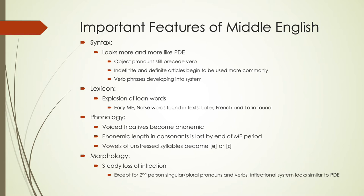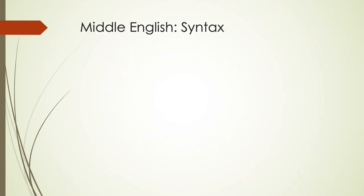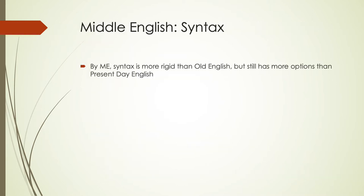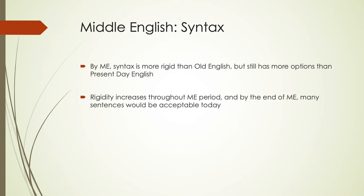Focusing on syntax and lexicon today, Middle English syntax is starting to become more rigid than Old English, but still a little bit less rigid than what we see in present-day English. We're starting to see syntax take up what's happening as we're losing inflection in morphology. The rigidity will increase throughout the Middle English period so that by the end of Middle English, by the time we get to Early Modern English, most sentences would be acceptable today. Earlier in the Middle English period, there's still some variation you wouldn't expect in present-day English.